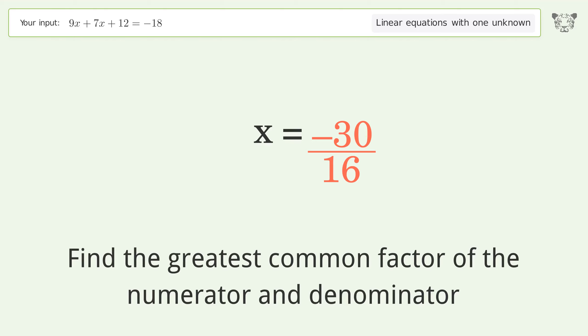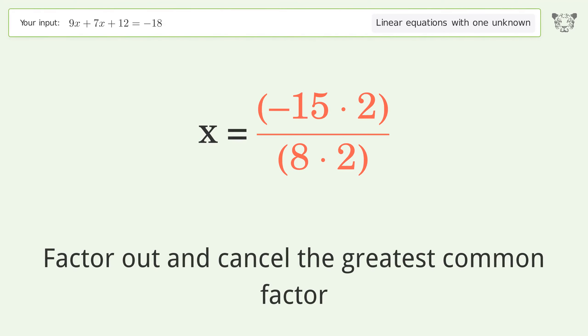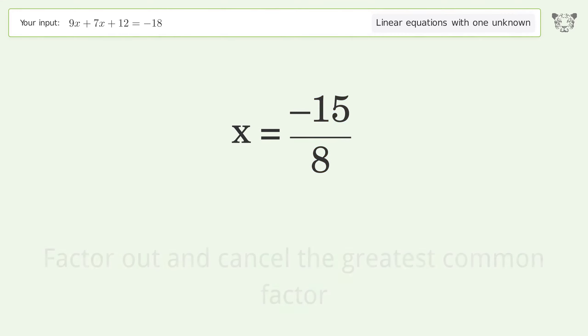Find the greatest common factor of the numerator and denominator. Factor out and cancel the greatest common factor. And so the final result is x equals negative 15 over 8.